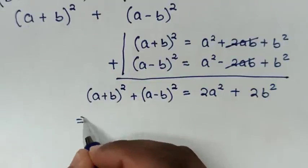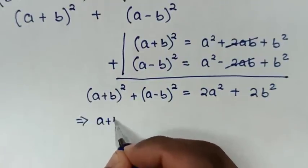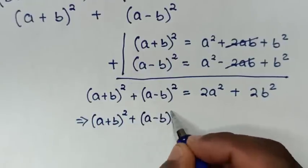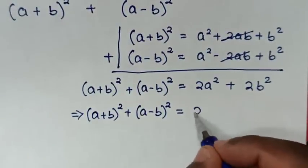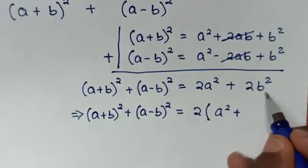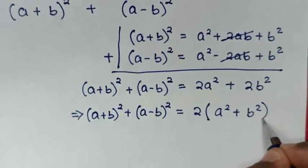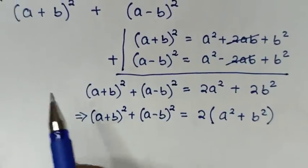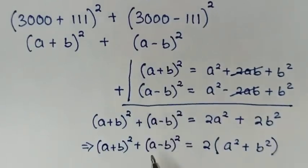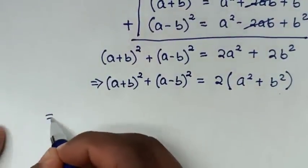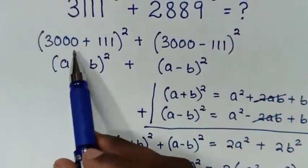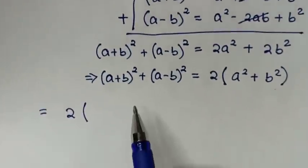Then in the next step, our formula will be: (A plus B) squared plus (A minus B) squared equals 2 times (A squared plus B squared), where 2 is factored out. From this expression, substituting A equals 3,000, it will be 3,000 squared.